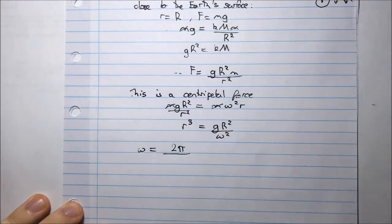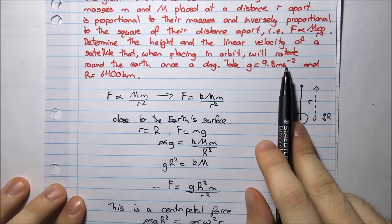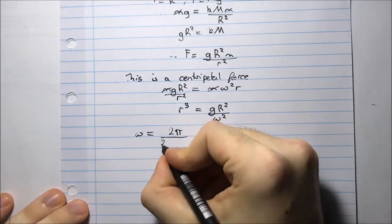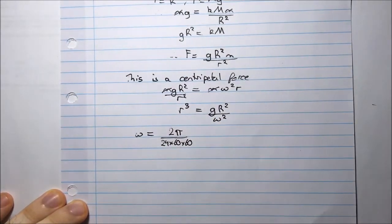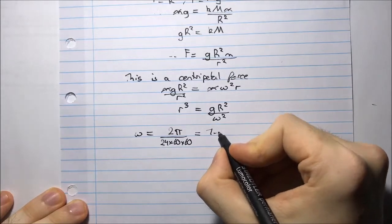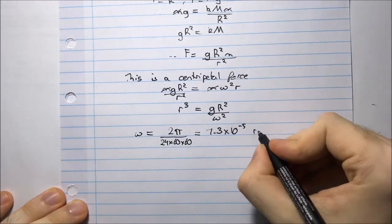So I want to complete this revolution in exactly one day. So that would mean 24 hours. But I don't want to work with hours. I'd like to work with seconds. So 24 hours would be 24 times 60 minutes times 60 seconds. And that equals 7.3 times 10 to the negative 5 radians per second.